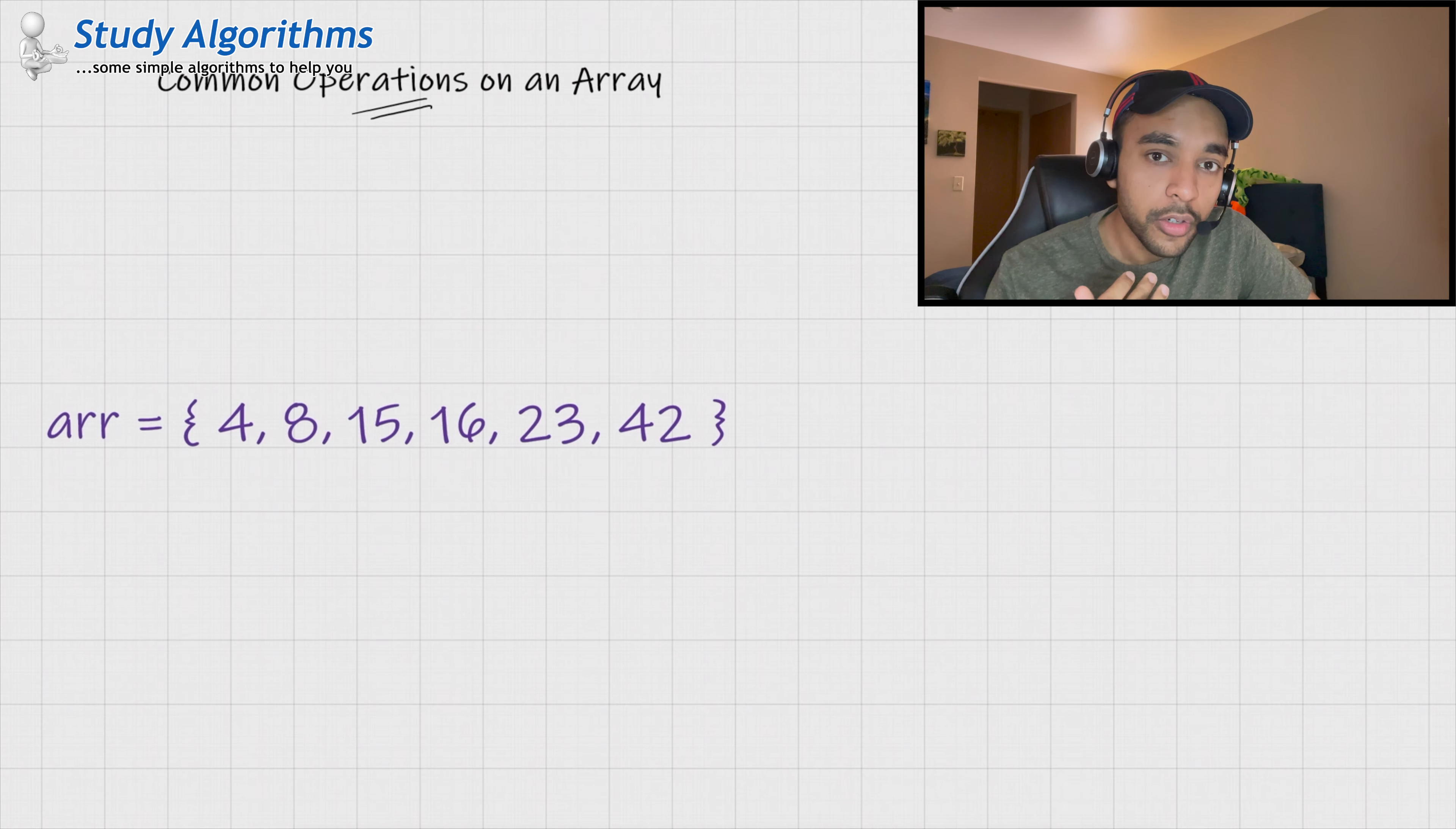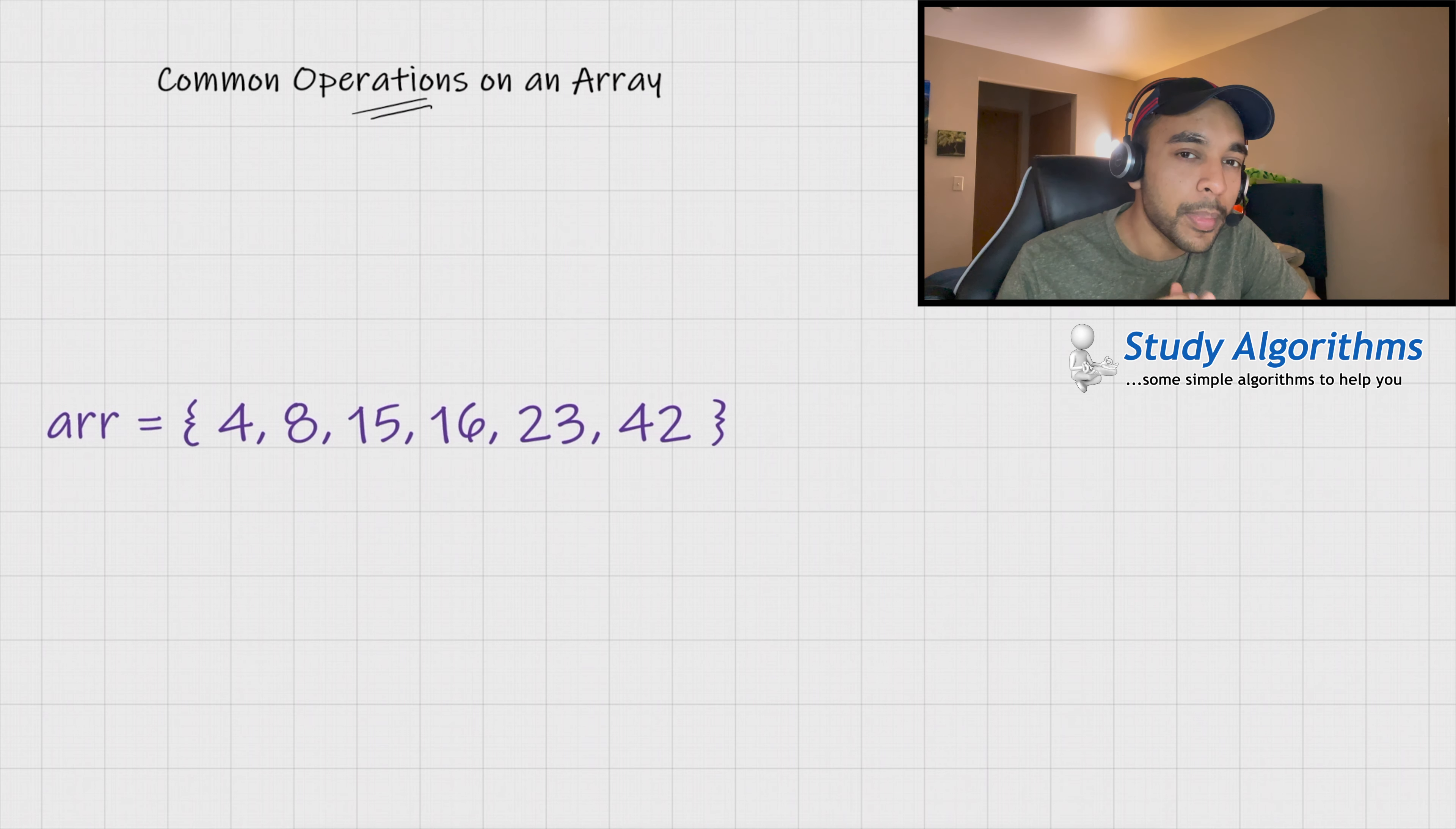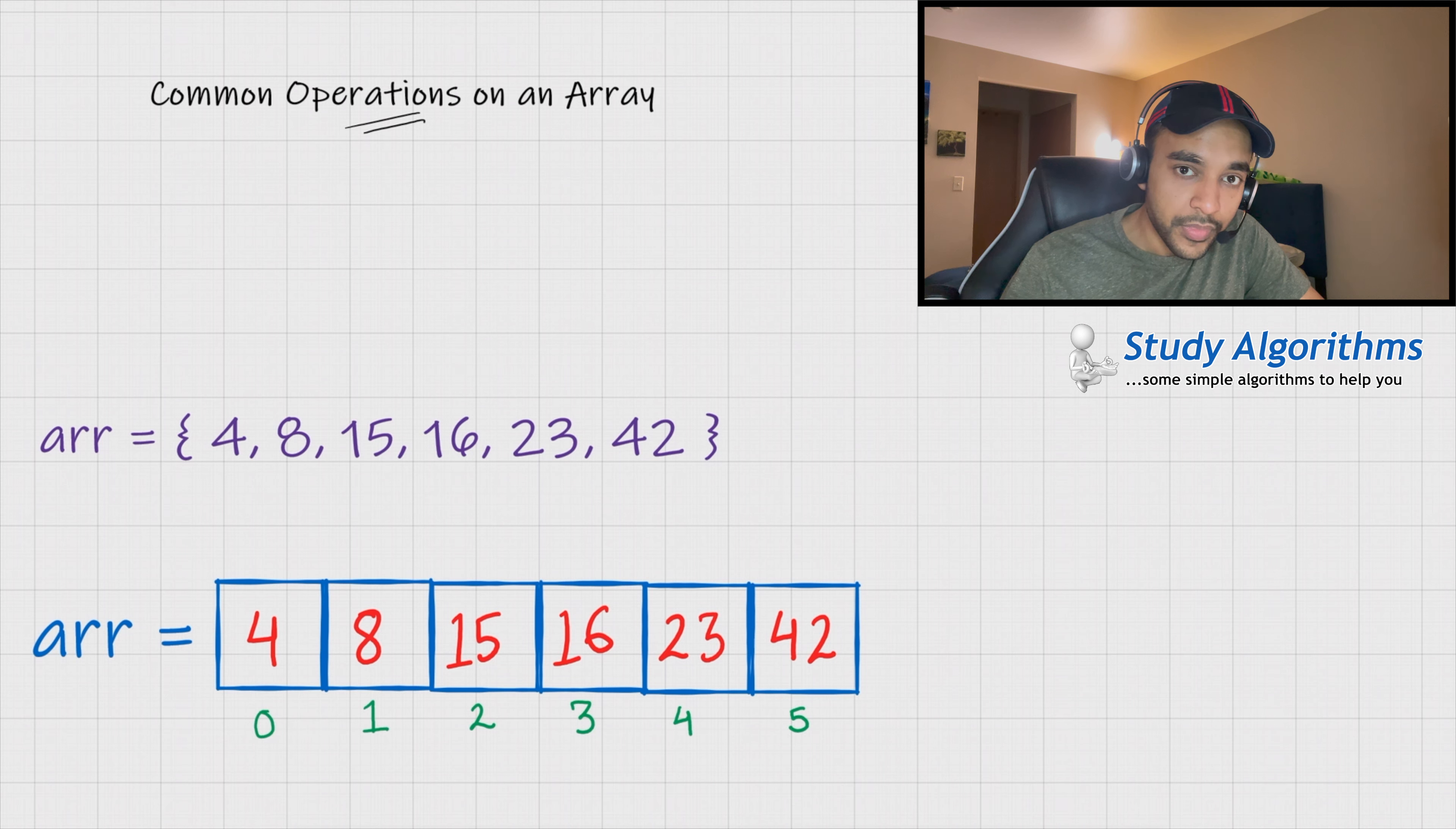First of all, how do you declare an array and how does that look? So, this is a very typical example of how an array looks. You have a variable arr and in that variable you are assigning some values. As soon as you assign these values, these get stored in the memory. And they are stored in the memory something like this. You can see that all of these elements are adjacent to each other. Now, how do you access these elements?